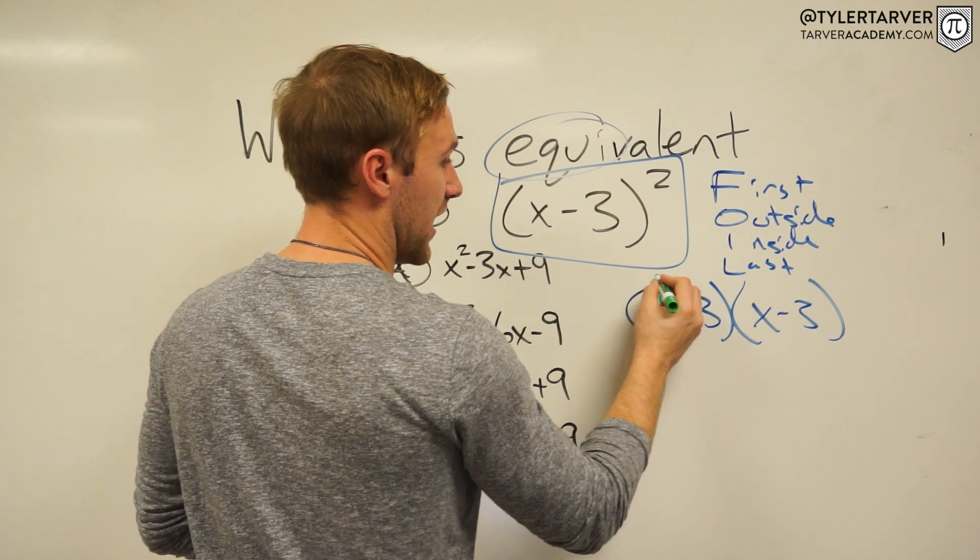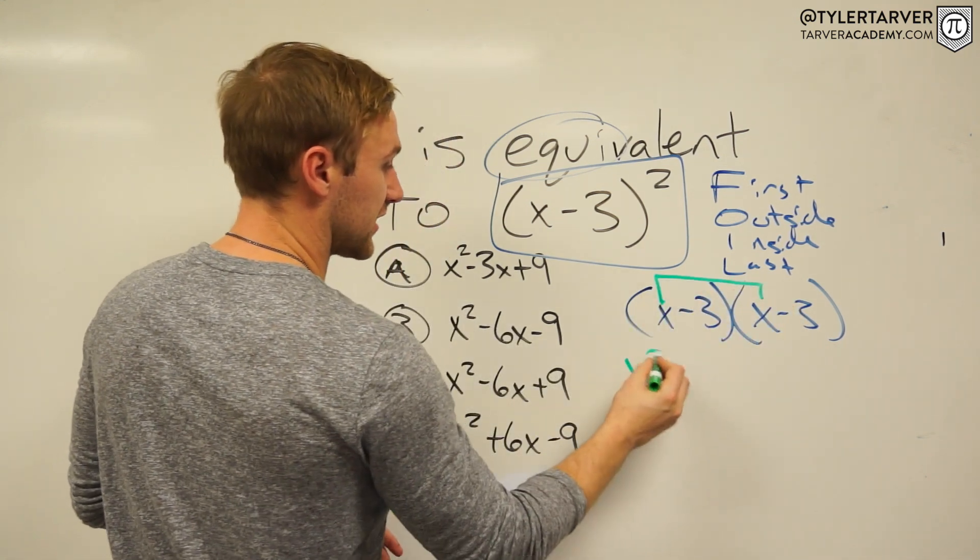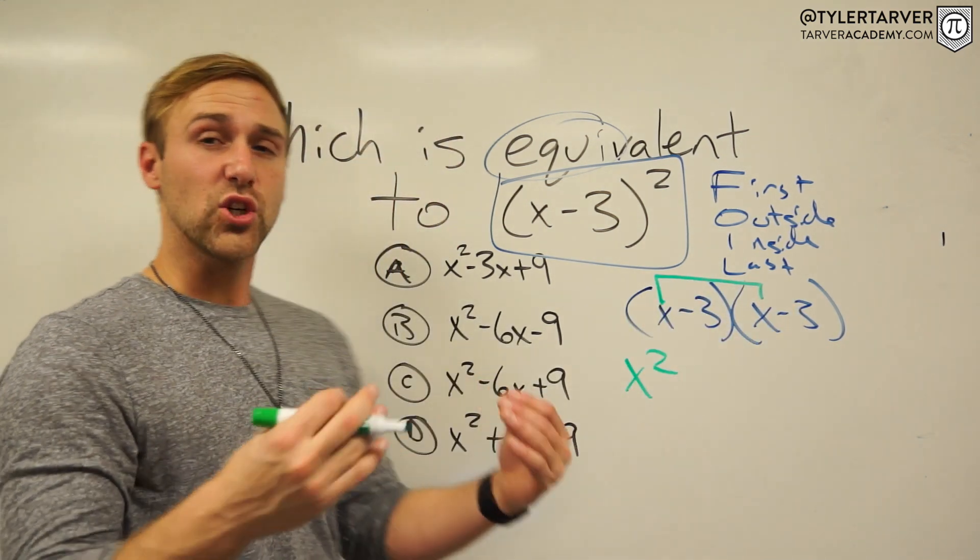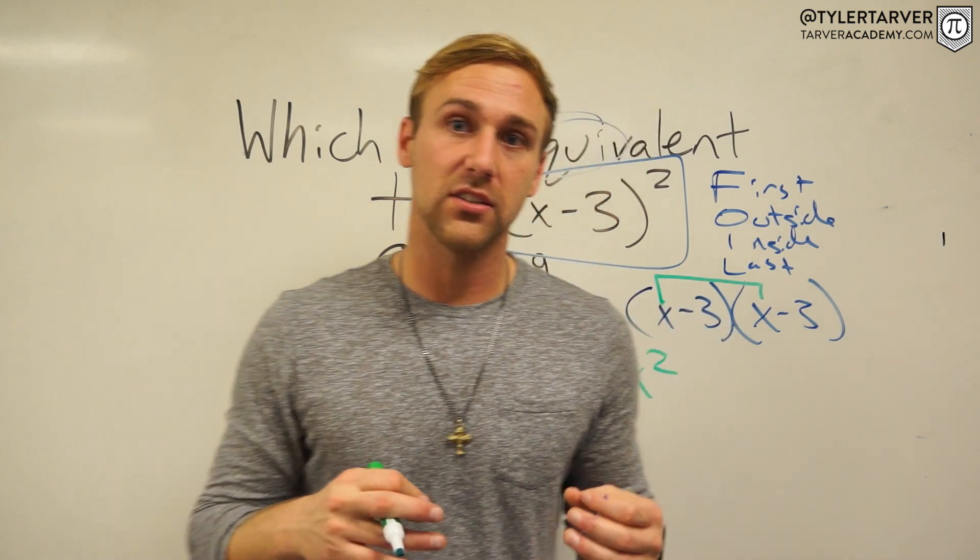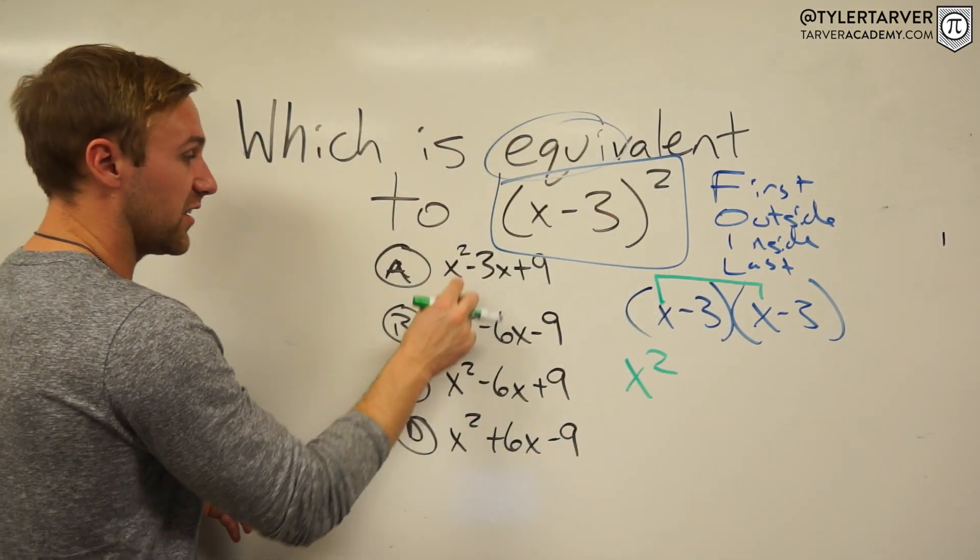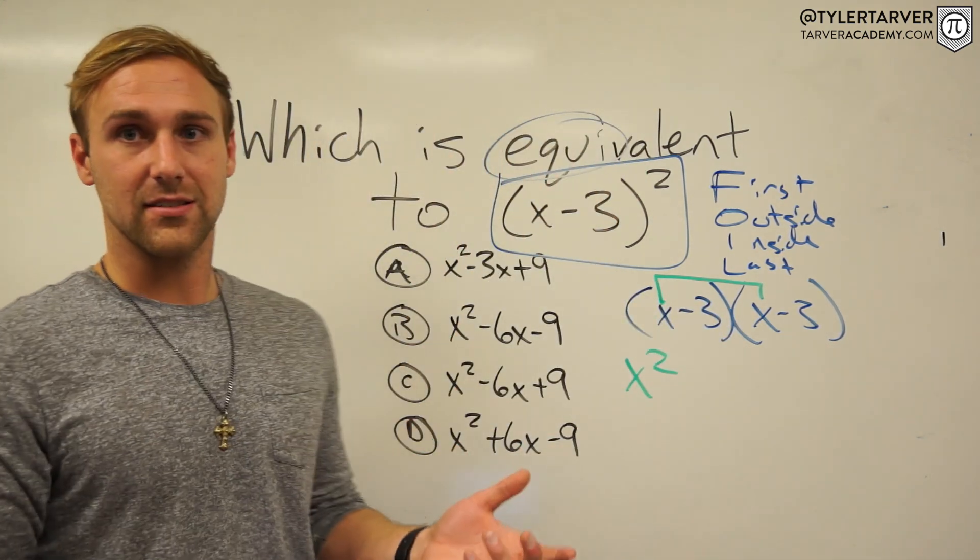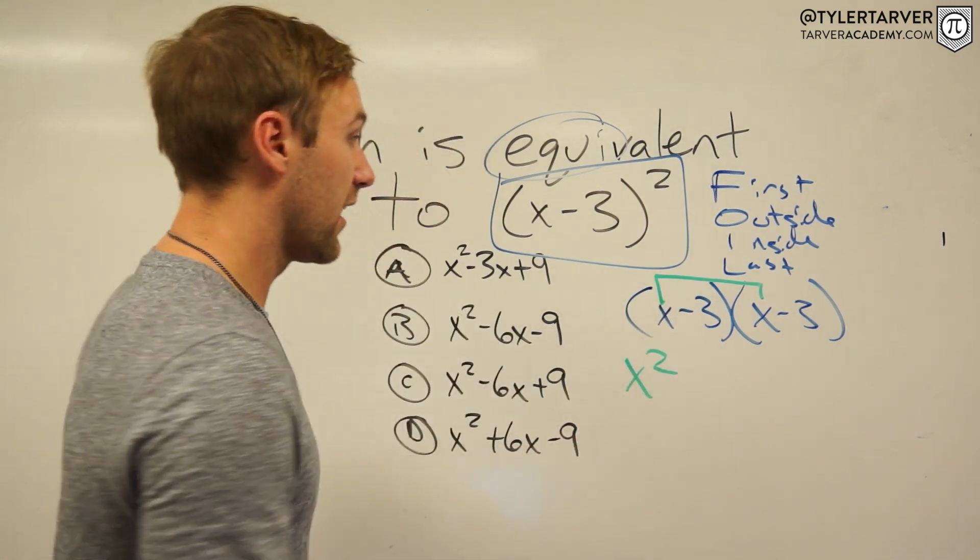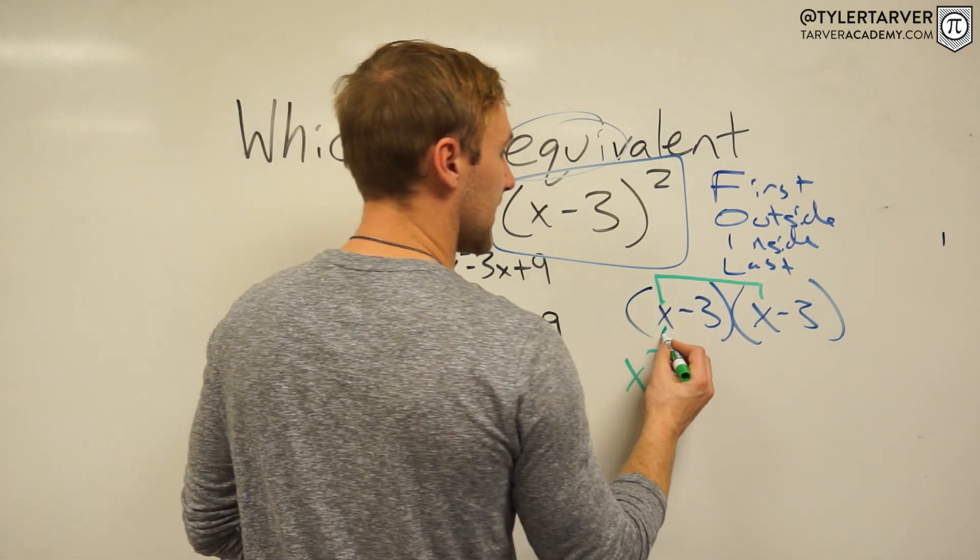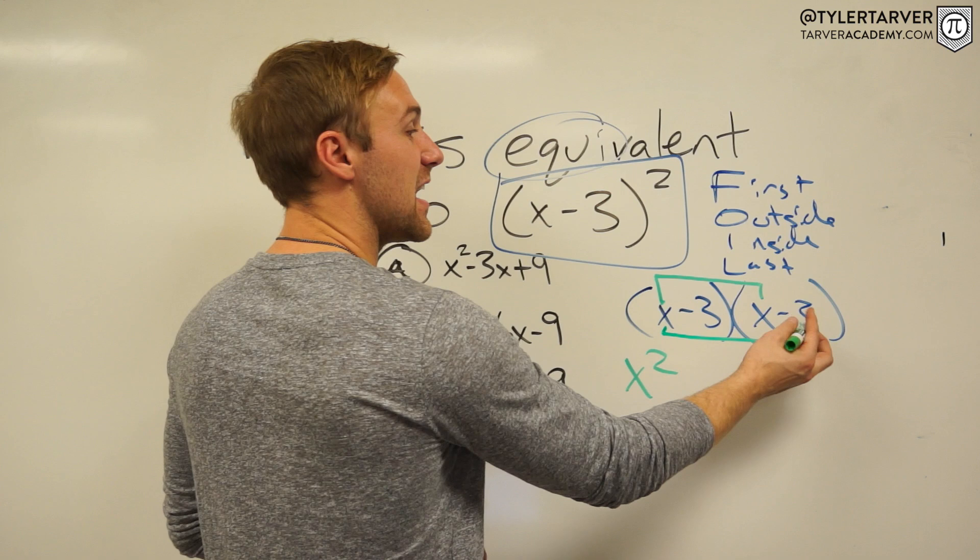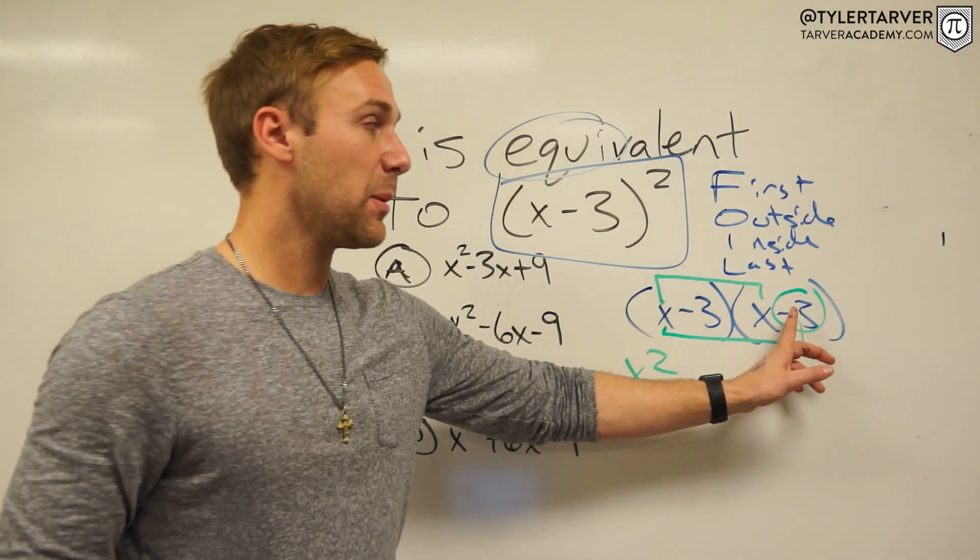First, we take the first two: x times x, which is x². Now, as you're working this, you can start using the process of elimination. Do all these have x² at the front? Yes, they do. So we're good on that.